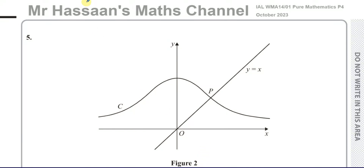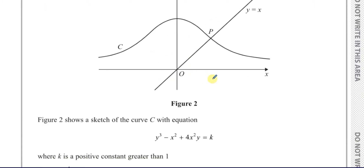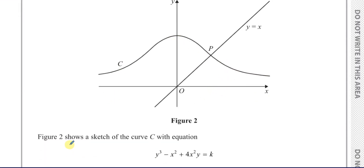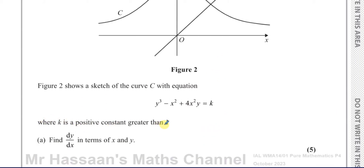Welcome back, this is Mr Hassan's maths channel. I'm now answering question five from the October 2023 international A-level Edexcel Pure Mathematics P4 paper. We have a question about a strange-looking curve — it looks like a normal distribution curve. Figure two shows the sketch of curve C with equation y³ - x² + 4x²y = k, where k is a positive constant greater than one.